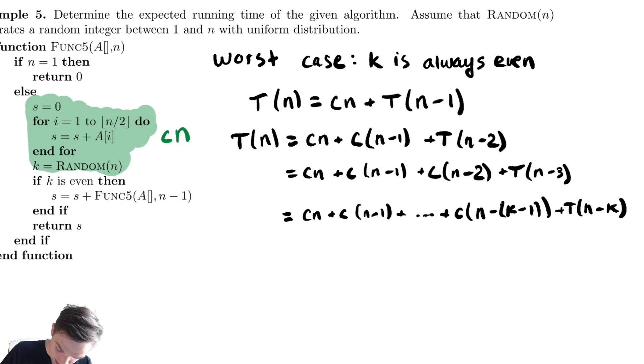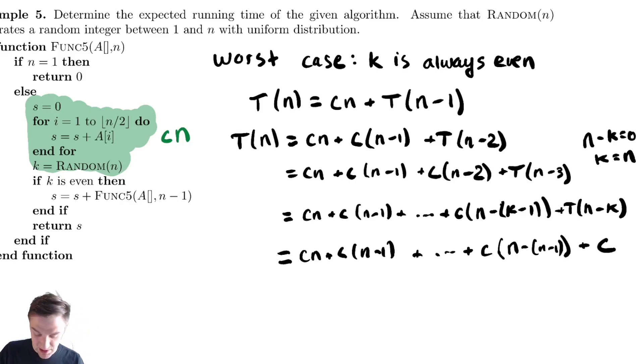Then we set n minus k equal to 0 and get k equals n. And then we get cn plus c(n-1) plus all the way down until we get c(n-n-1) plus c. Why c? Well T(1) is constant so that's a T(1) at the end there.